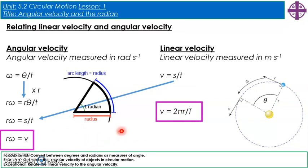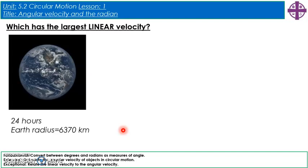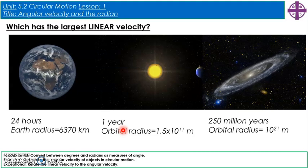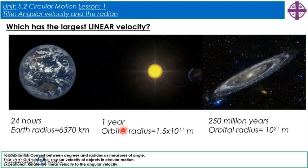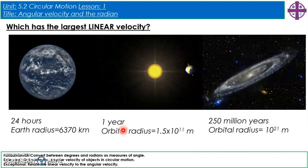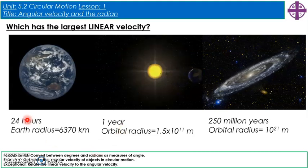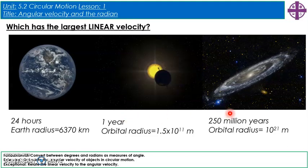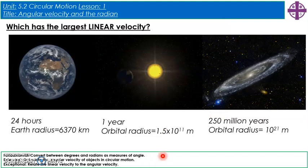Now let's use those equations to find which has the largest linear velocity — the rotation of the earth, the orbit of the earth around the sun, or the rotation of the solar system around the centre of the galaxy. Use the angular velocities from before along with the given time periods and radii.